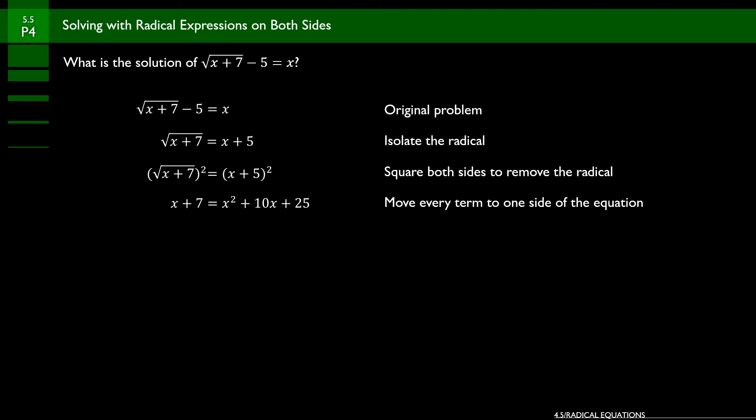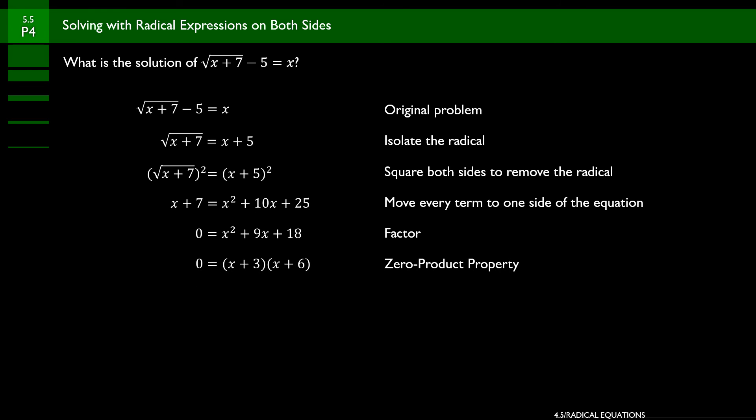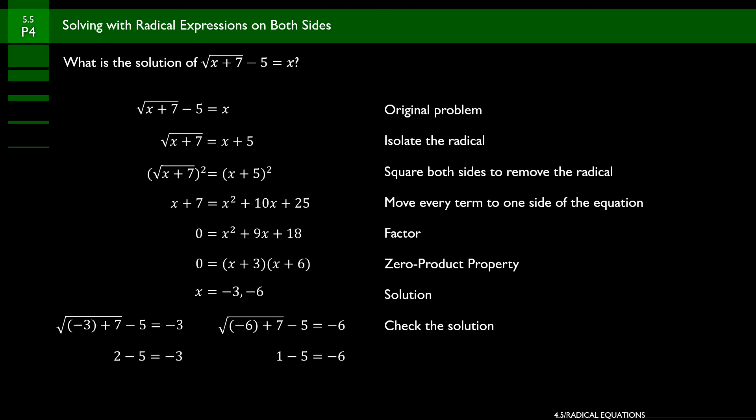Since we now have a full quadratic on the right side with an a term, b term, and c term, we move everything to one side. Moving x and 7 from the left gives 0 equals x squared plus 9x plus 18. We factor this to x plus 3 times x plus 6, giving solutions x equals negative 3 and x equals negative 6. Checking both in the original equation: negative 3 gives a true statement, but negative 6 gives a false statement. So negative 3 is the solution and negative 6 is extraneous.